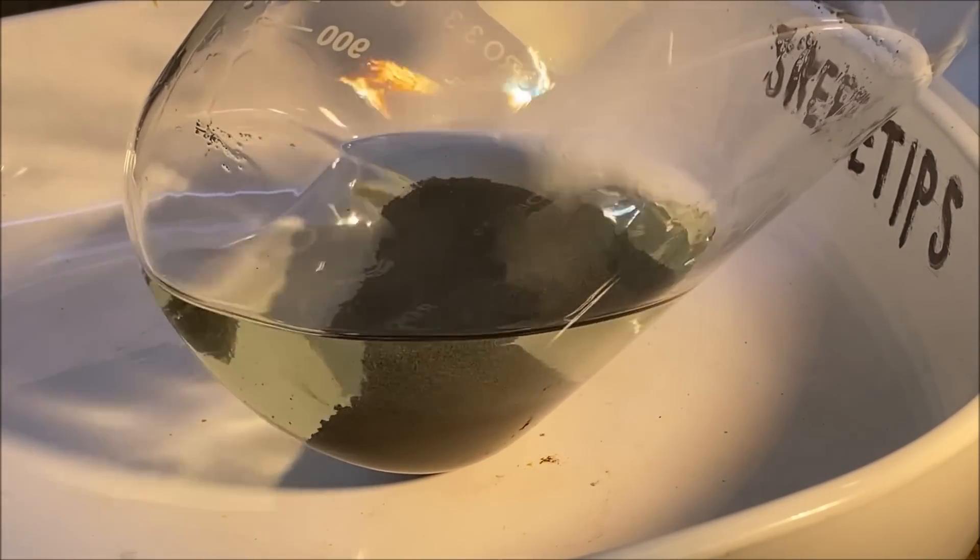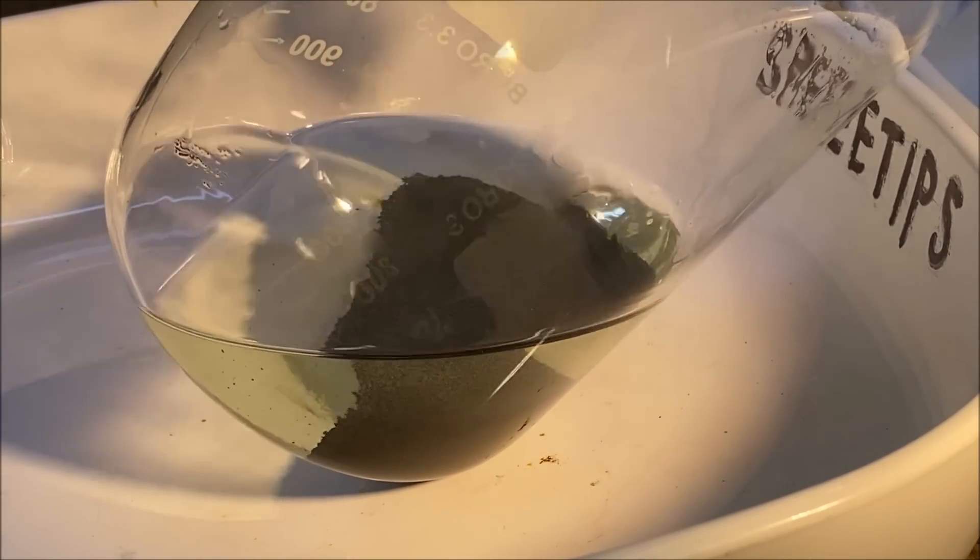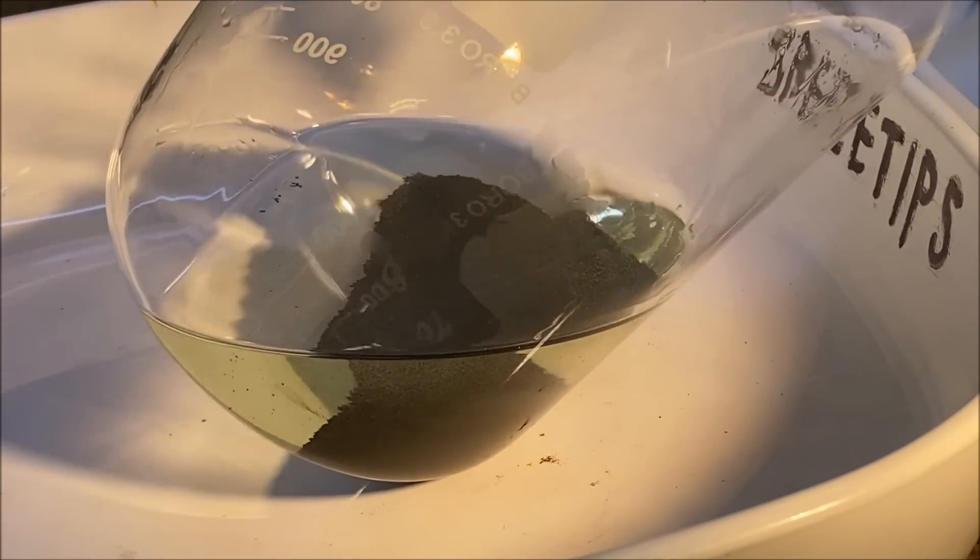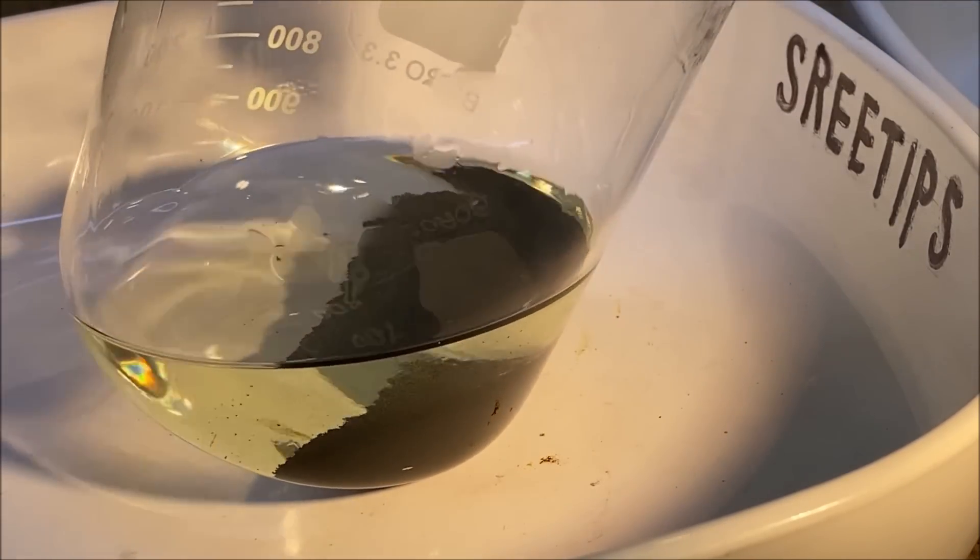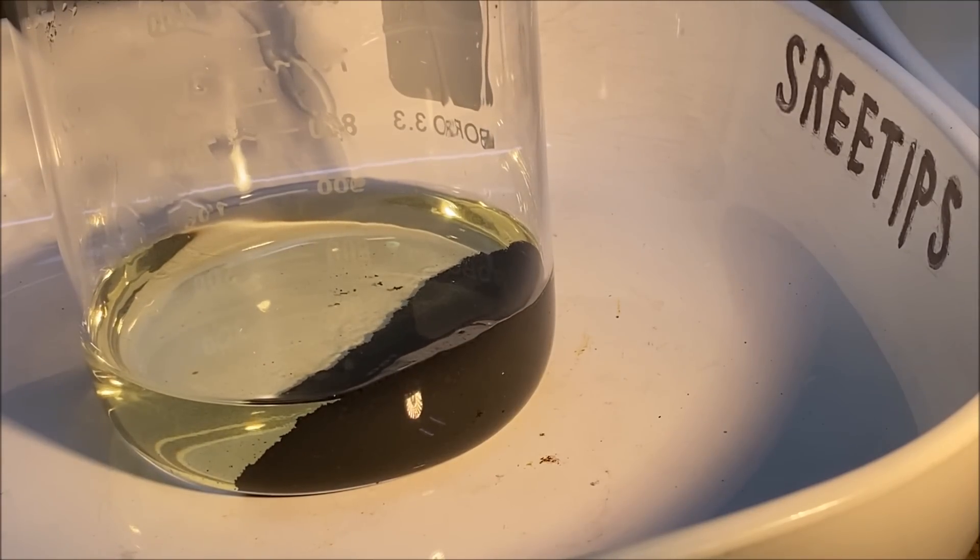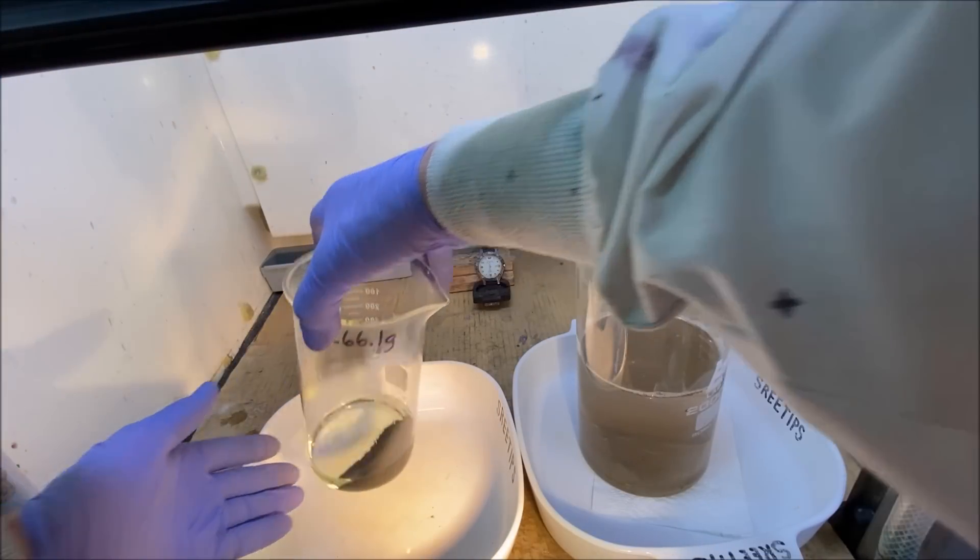You can see the color of the solution start to turn. That's because if you leave it set inside the hydrochloric acid too long, that finely divided black powder will try to go back in solution. Let's pour this off here.